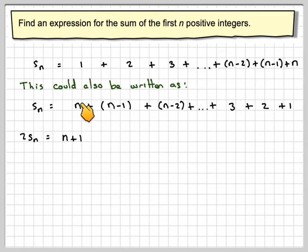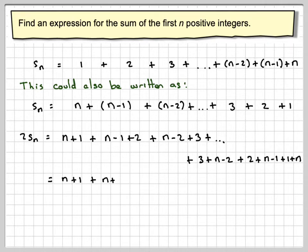so here we're going to get n plus 1, n minus 1 plus 2, and then n minus 2 plus 3 and then so on. We're going to get 3 plus n minus 2 plus 2 plus n minus 1 plus 1 plus n at the end there.